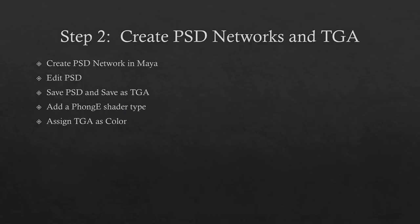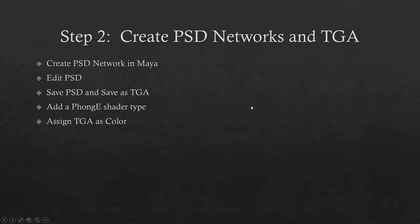Step two, we're going to create PSD networks and save a target out for the actual material. We'll create the PSD network in Maya, edit it a little bit, save the PSD and the target file, get the right shader type, and then assign the target as the color. We'll explain why this is important.